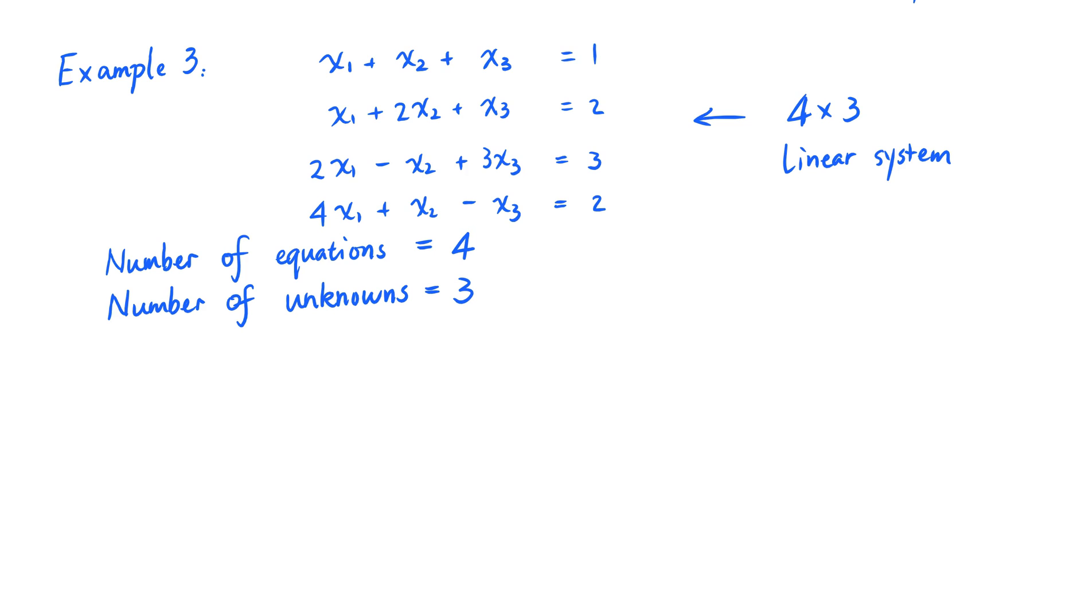Okay, now here's a bonus example. Sometimes you will see an unknown that is missing from an equation. For example, I'm going to modify example 3 and make it example 4 by taking out a term in the second equation. So now the unknown x sub 2 is missing from the second equation. But it's still a good idea to write the second equation this way so that there is a space between x sub 1 and x sub 3 so that all the x sub 1, x sub 2, and x sub 3 are aligned in the same vertical lines.